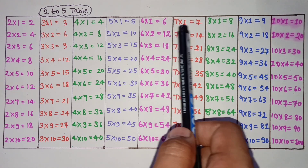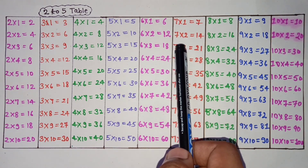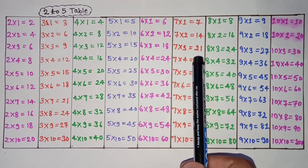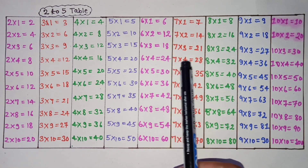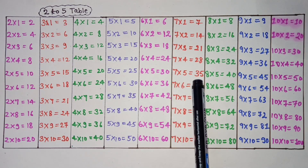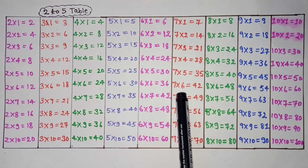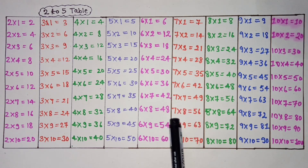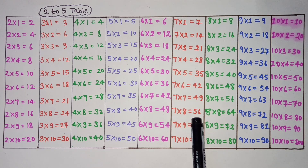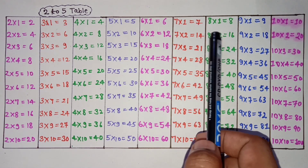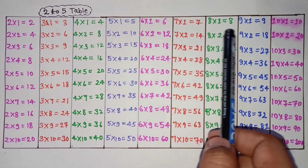7×1 is 7, 7×2 is 14, 7×3 is 21, 7×4 is 28, 7×5 is 35, 7×6 is 42, 7×7 is 49, 7×8 is 56, 7×9 is 63, 7×10 is 70.